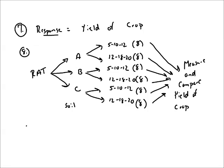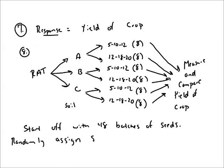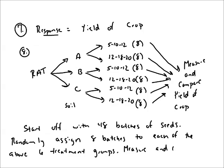Then we put it in a sentence. Start off with 48 batches of seeds. Randomly assign eight batches to each of the above six treatment groups. Measure and compare yield of crop.